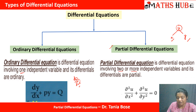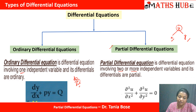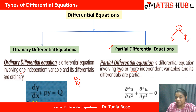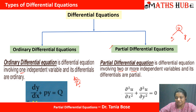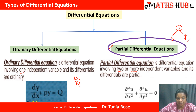Whenever we have one independent variable, derivatives are represented as dy/dx — these are total derivatives. When there are two or more independent variables, we take the partial form of the derivative, because we differentiate with respect to one variable while keeping the other variable constant.